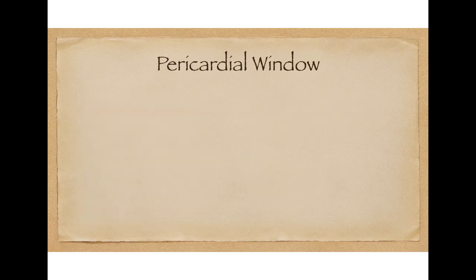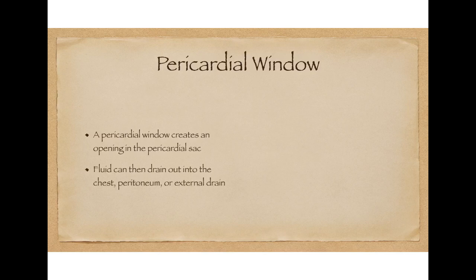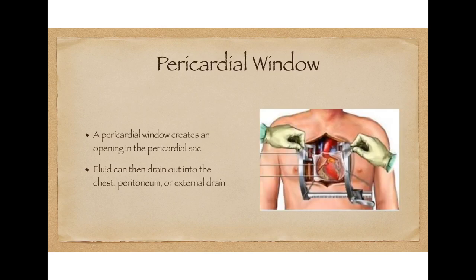Definitive management includes the surgical creation of a pericardial window — essentially a surgery to create an opening in the pericardial sac, which allows fluid or blood to drain out into the chest, peritoneum, or an external drain placed in the patient. Here's an image of a patient undergoing a pericardial window where a sternotomy is performed, the pericardium is folded back, and an opening is created where fluid can drain out. And that concludes this lecture on pericardial diseases. Thank you so much, and have a great day.